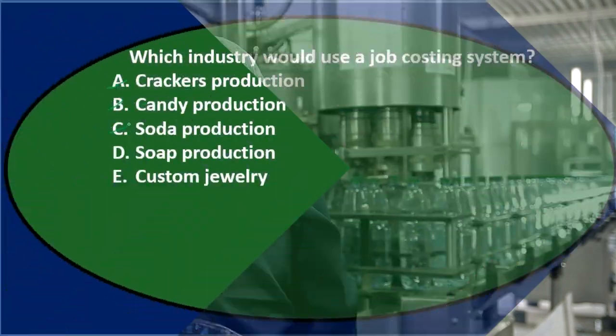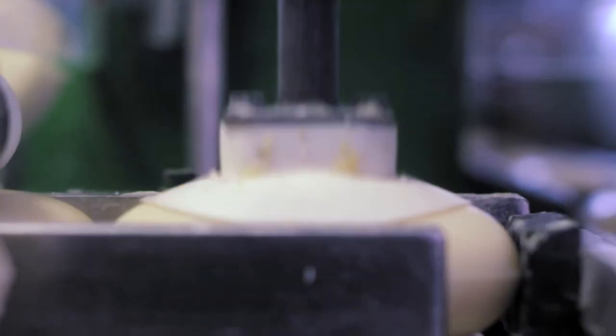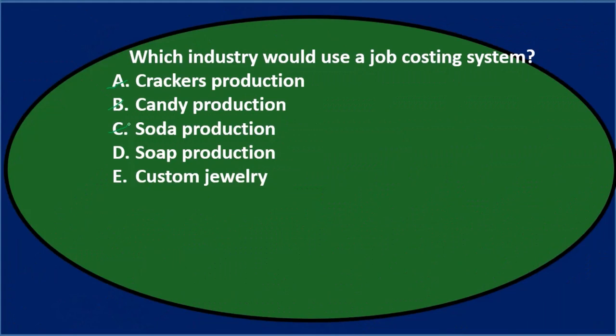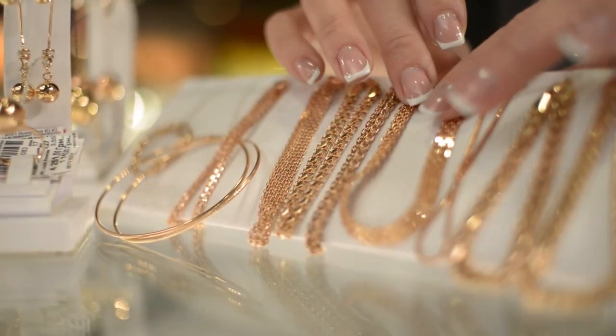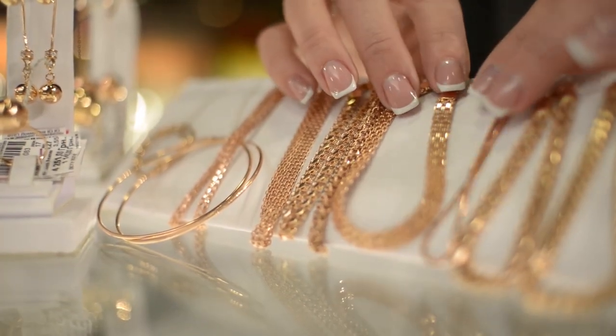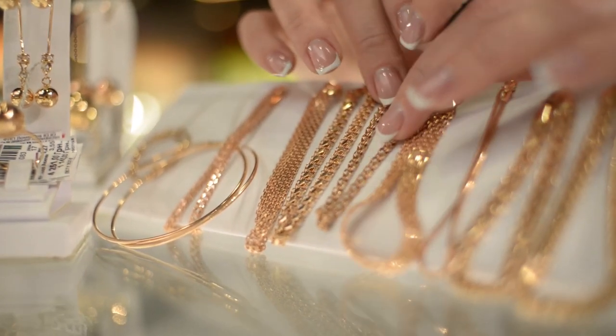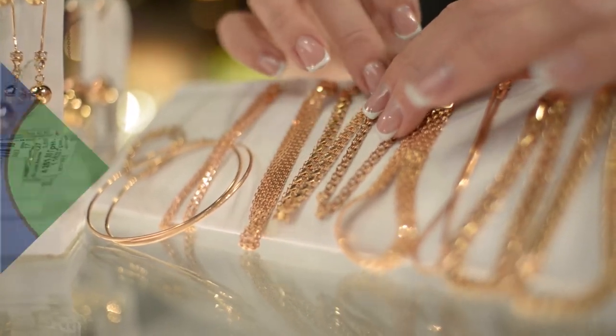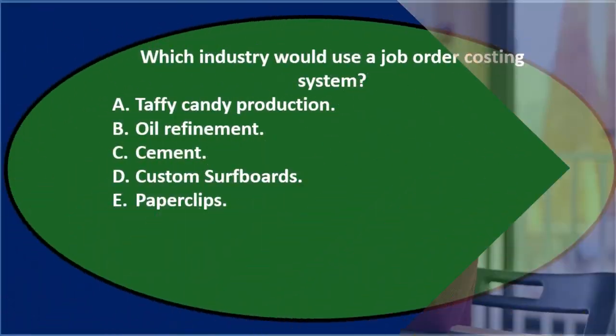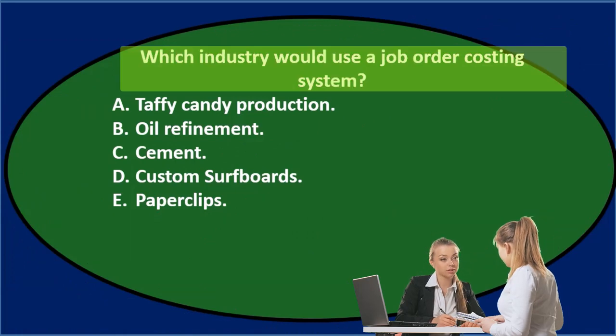Soap is the same kind of thing — most soap production would be standardized unless we're doing some kind of specialty type of thing. That leaves us with custom jewelry, and basically anything that says 'custom' is probably going to be the answer in this type of question when looking for job cost versus process cost. Final answer: custom jewelry.